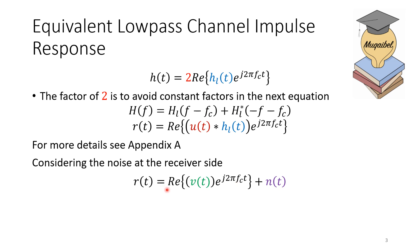The received signal equals v(t), which is this convolution times exponential plus noise. So h_l, u(t), and v(t) are lowpass equivalents; there is no need to specify a certain carrier. We can define the signal-to-noise ratio. This is the noise and this is the signal, the lowpass equivalent.